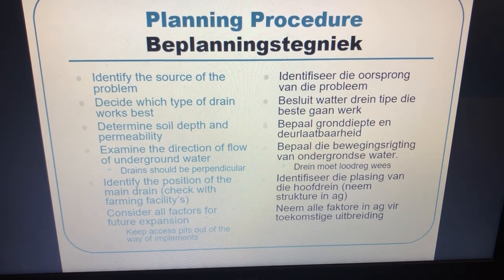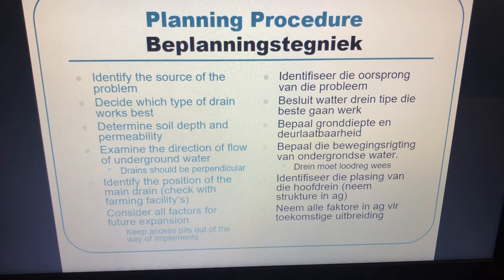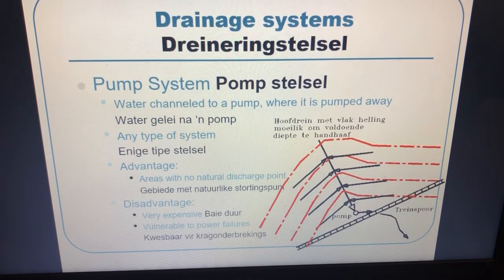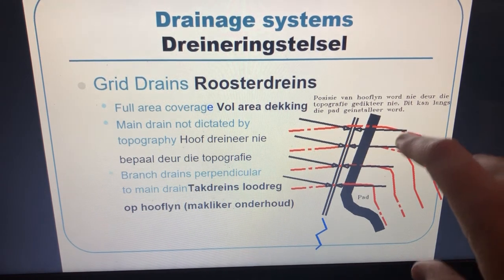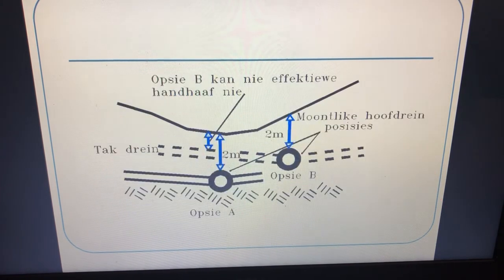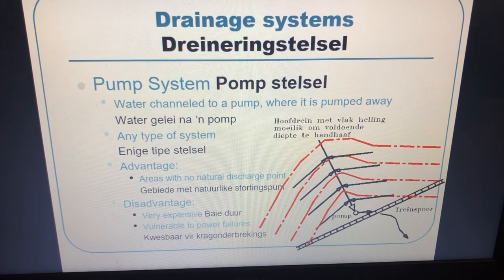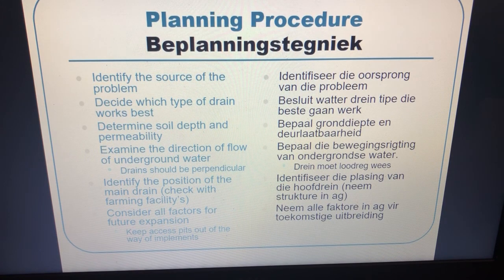To summarise the planning steps: identify the source of the problem, decide which type of drain works best, determine soil depth and permeability, examine the direction of underground water flow — especially important for a fishbone system — identify the position of the main drain, consider all factors for future expansion, and keep access pits out of the way of implements. For a grid system your access pits are in a straight line so you know exactly where they are, but for a fishbone they may be scattered, which can lead to damage to access pits or implements.